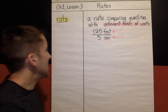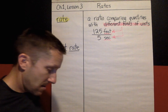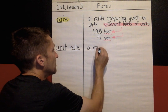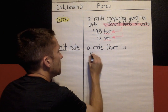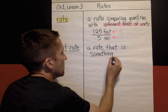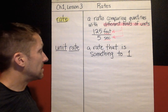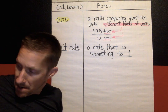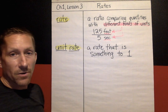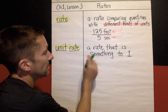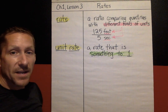The next thing we're going to talk about: what is a unit rate? A unit rate is a rate that is something to one. Another way to think about it is that the denominator is one. Keyword: unit rate. The big meaning is that a unit rate is a rate that is something to one — that's the big idea.